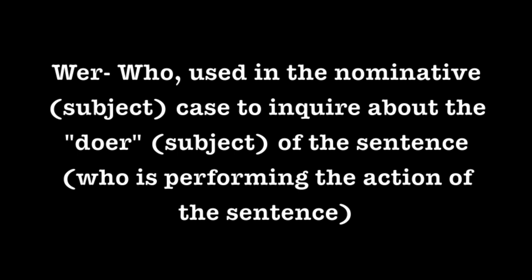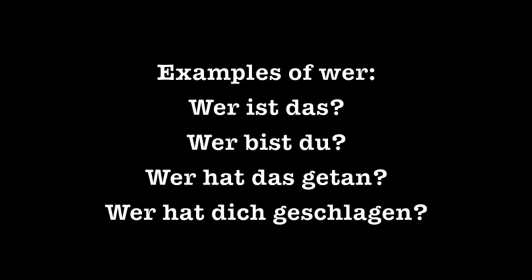The first question word is Wer, which means 'who' in English. It's used in the nominative case to inquire about the doer of the sentence — also known as the subject, or who is performing the action. Some examples using Wer: Wer ist das (who is that), Wer bist du (who are you), Wer hat das getan (who did that), Wer hat dich geschlagen (who hit you).